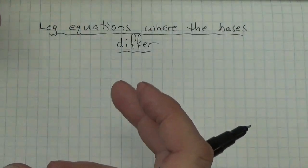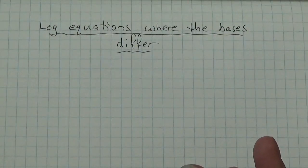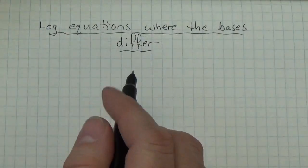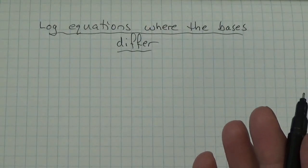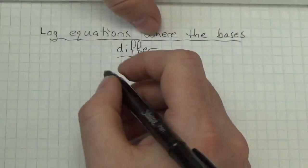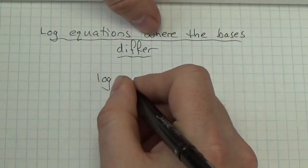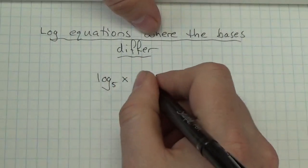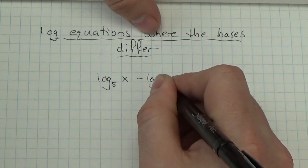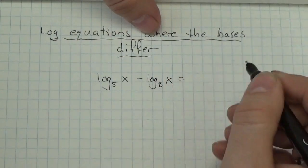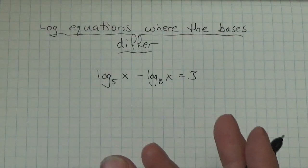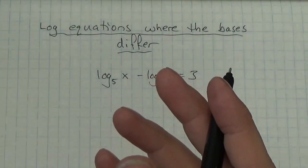Hi everybody. What I want to do here is walk through an example of a question involving a log equation where the bases are different, and what you do when that happens. So let's just throw one down here — let's say you've got log base 5 of x minus log base 8 of x is equal to 3. I just want a couple of logarithms here that are different.